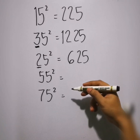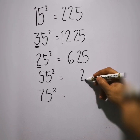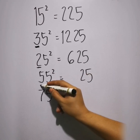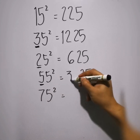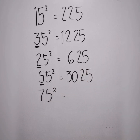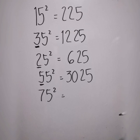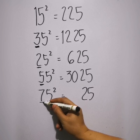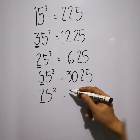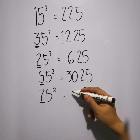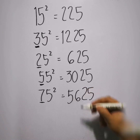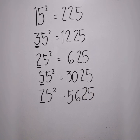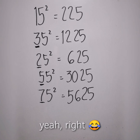For 55 squared: first step is 25. The next digit to 5 is 6, so 5 times 6 is 30. The answer is 3025. For 75 squared: put 25. The next digit to 7 is 8. 7 times 8 is 56. So the answer is 5625. Very easy!